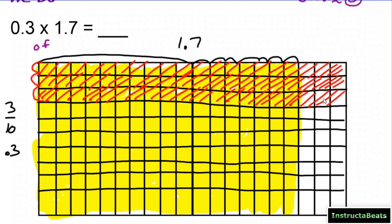I'm not counting the white spots with just the red diagonal, and not counting spots that are only lightly shaded. I only count spots shaded twice. So: 10, 20, 30, then 31, 32, 33, 34, 35, 36, 37, 38, 39, 40, 41, 42, 43, 44, 45, 46, 47, 48, 49, 50, 51. That is 51 hundredths — because the denominator tells you each whole is split into 100, so my answer is 0.51.